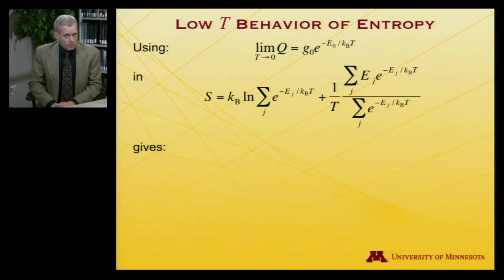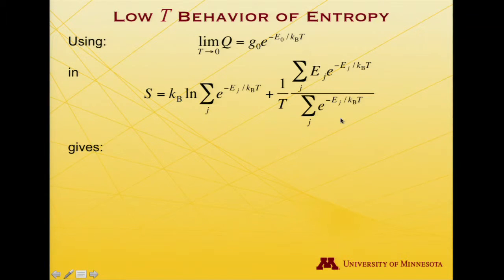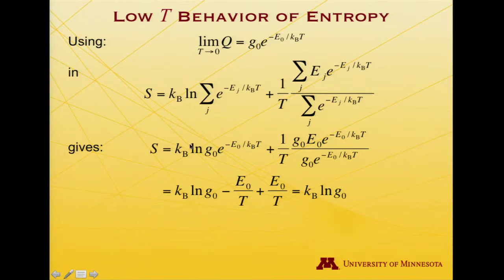So given that that's the low temperature behavior of the partition function, let me then return to my general expression here, apply that same sort of analysis to all these sums over exponentials. And I'll end up with, then, this sum is replaced by g zero e to the minus e zero. This sum is also replaced by that. Of course, it was being multiplied times the state energy, so the only state that survives is the ground state. So that e zero sticks around. And this is, again, just Q re-expressed.